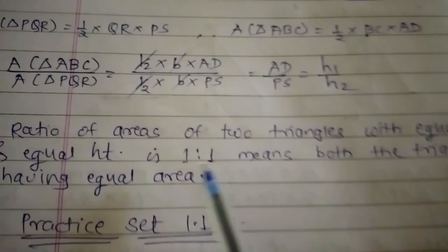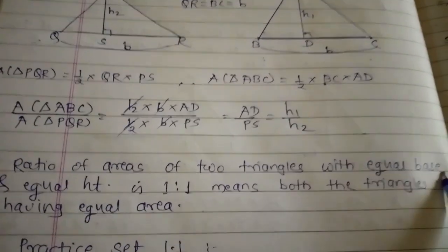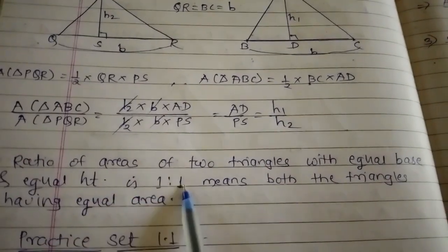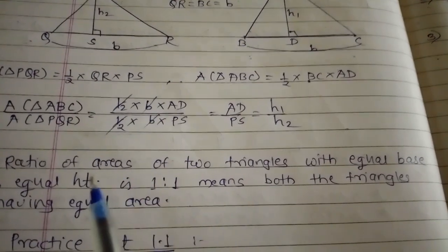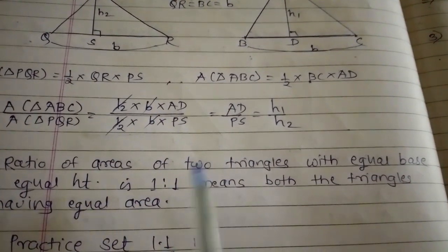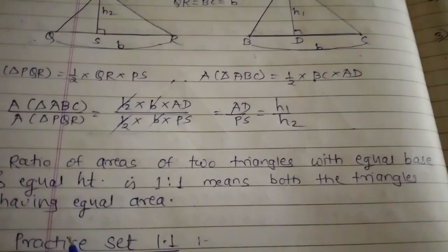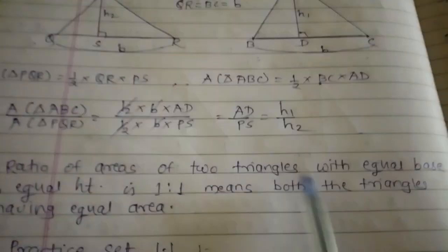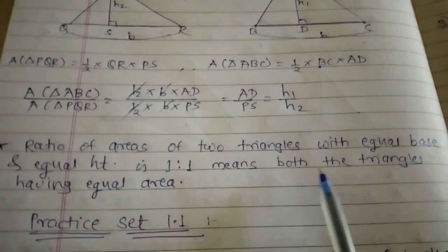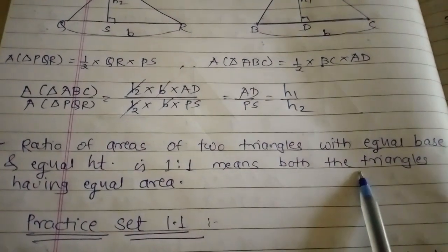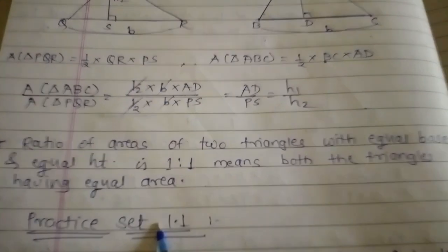The fourth statement: the ratio of area of two triangles with equal base and equal height is 1:1. If the bases are same and the heights are same, then the area of both triangles is also the same — the triangles have equal area.